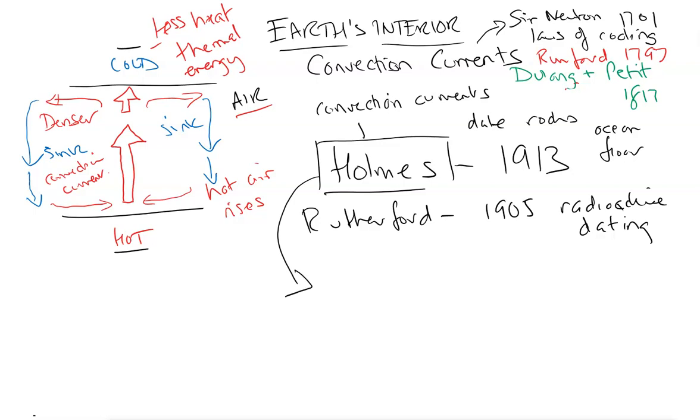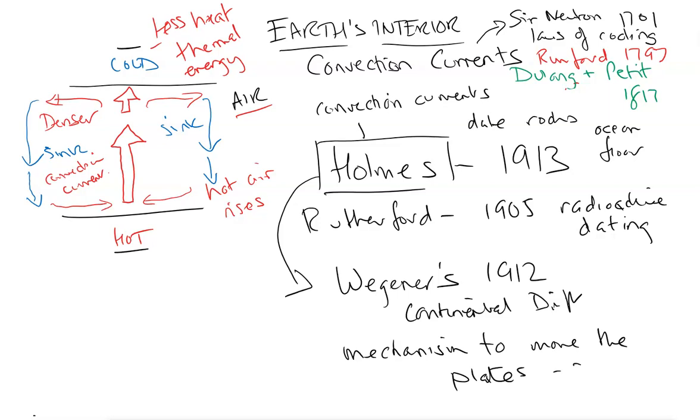He also linked it up to a missing link for Wegener's 1912 theory on Continental Drift, where all of the evidence suggested and made a strong case for the existence of Pangaea and everything was connected, but Wegener could not explain how these large continental masses were moving. Holmes suggested that there were convection currents as a mechanism to move the plates as the first step in proving Wegener's theory of Continental Drift.